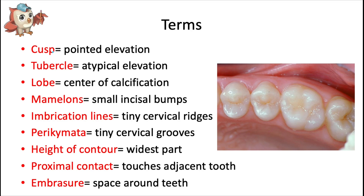A cusp is a pointed or rounded elevation or mound on the crown of a tooth. A tubercle is a small elevation on a tooth due to extra formation of enamel — a deviation from normal. A lobe refers to a center of calcification from which a tooth develops, basically the separate divisions that come together to form a tooth. In molars, lobes often become individual cusps.